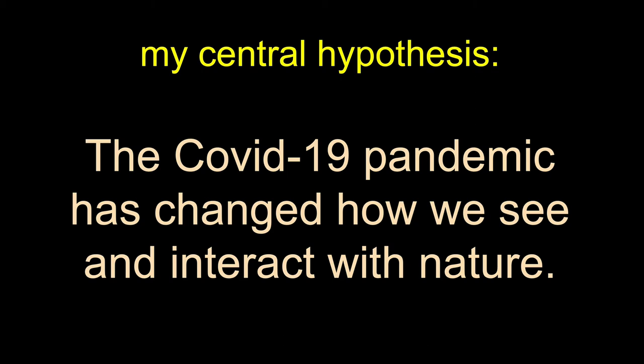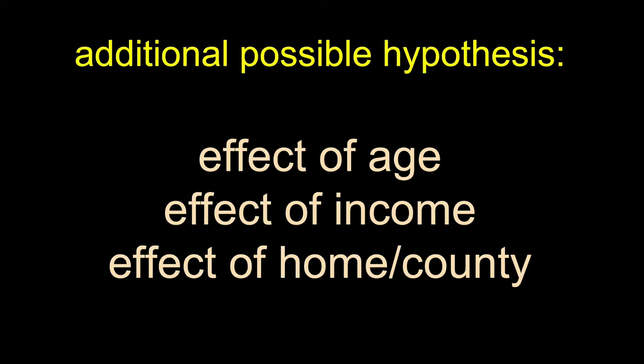So I want to know how we've interacted with nature and the outside world has changed. That's my main hypothesis, but I'm also interested in other factors that might help explain differences. In particular, I'm wondering if people's age is going to impact that, if how wealthy they are will impact that, and their geographic location — if that's going to impact how they're going out and about during the pandemic.